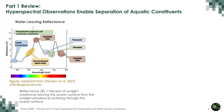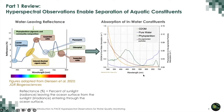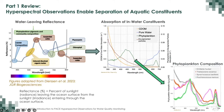Dr. Manino also talked about hyperspectral observations. They enable separation of aquatic constituents, as shown here — the wavelength on one axis and reflectance on the other. Different constituents are found from different parts of the spectrum. The figure shows the spectral signature of colored dissolved organic matter, phytoplankton, and depigmented particles. Based on that, phytoplankton constituents and composition are derived.